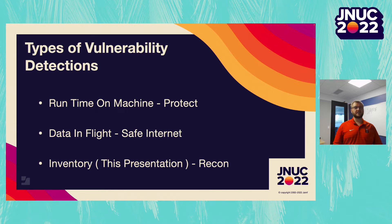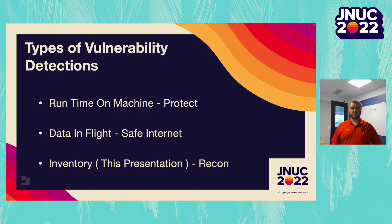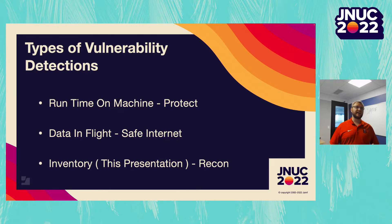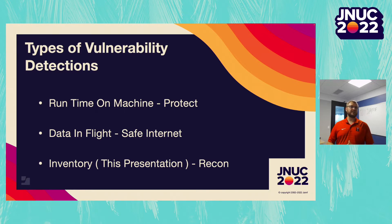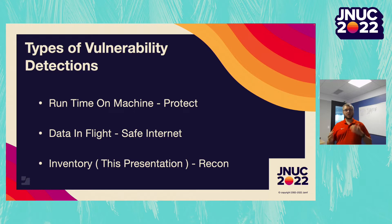The next is you can detect a lot of these through data in flight. This is what our Safe Internet solution is about — detecting whether your device is in communication with a nefarious solution out there. For instance, are you talking with a government entity you're not allowed to talk to? Are you talking to a botnet? Is your data being protected along the way? And then the third one — and this is what this presentation is actually about — is an inventory slash passive type of detection.